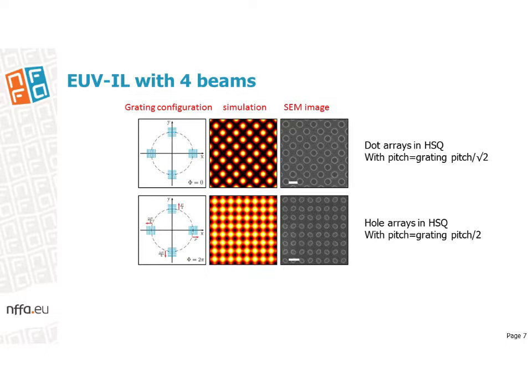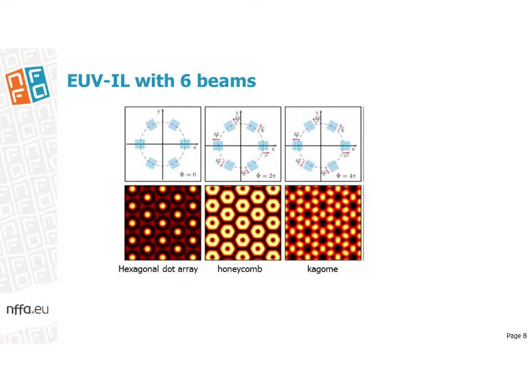It should be noted that the relative phase of the beams is crucial in defining the aerial image. We can change the phase of the beams by tuning the relative position of the individual diffraction gratings on a mask. In the example shown, the phase is changed so that the resulting aerial image has a different tone and different period. If six beams are interfering, the resulting aerial image can be a hexagonal dot array, or a honeycomb structure, or a so-called Kagome pattern, depending on the phase of the beams.